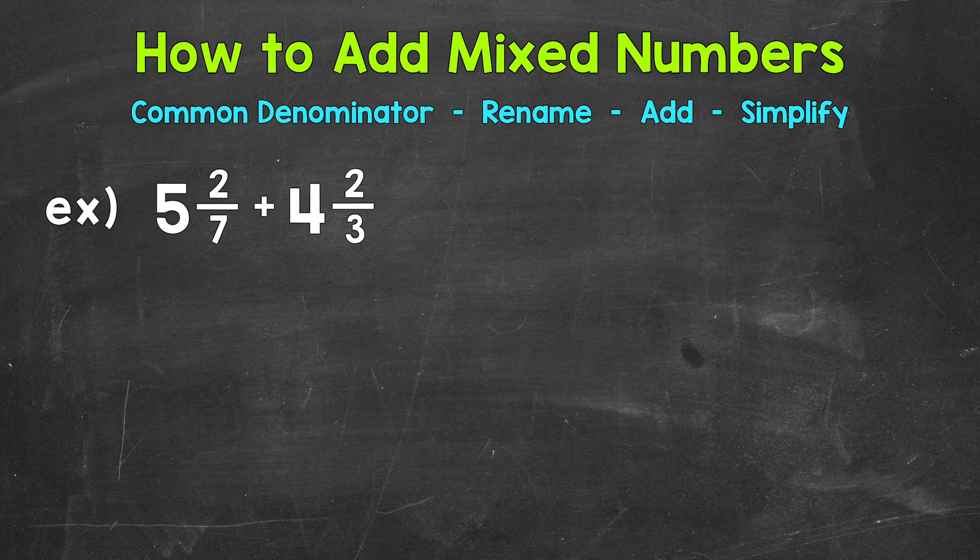Let's jump into our example where we have 5 and 2 sevenths plus 4 and 2 thirds. Now the first thing that I'm going to do, I'm going to rewrite this problem vertically, so up and down, lining up the fractions and whole numbers.